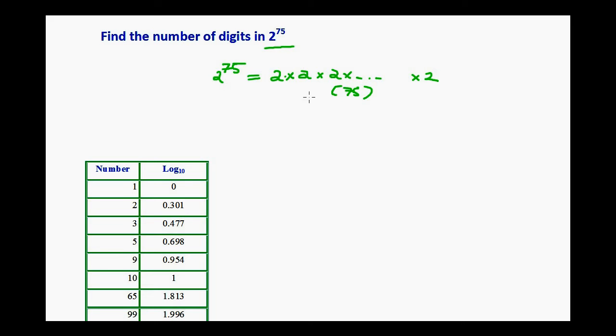Because the number is very big, manual multiplication is very difficult to find this number. It's a laborious task.